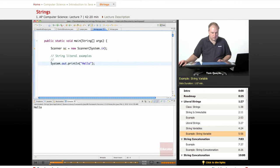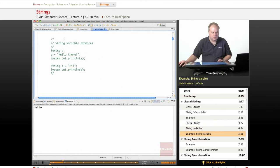I will comment out first example so we don't get duplicate output. And in this example, here I declare a string s and I assign it the value hello there. And I call print line on s to print the contents of the object s, which is a string. Then I use the second method declaring a string and assigning it a value on the same line.